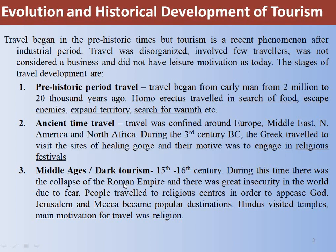The third stage is Middle Ages or Dark Tourism, which happened between the 15th and 16th century during the collapse of the Roman Empire. There was great insecurity in the world due to fear, and people traveled to religious centers to appease God — places like Jerusalem, Mecca, and other popular destinations. Hindus also started to visit temples. The main motivation for travel during this period was religion.